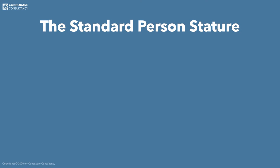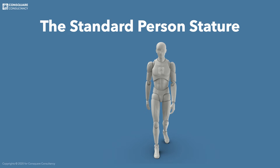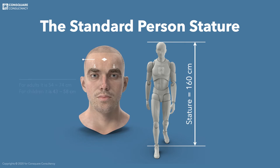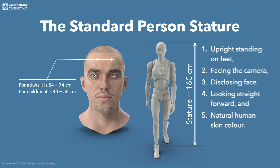Now let us introduce the standard person's stature. The stature height equals 160 centimeters. Furthermore, the standard person should be upright standing on feet, facing the camera, disclosing their face, looking straight forward, and displaying natural human skin color.